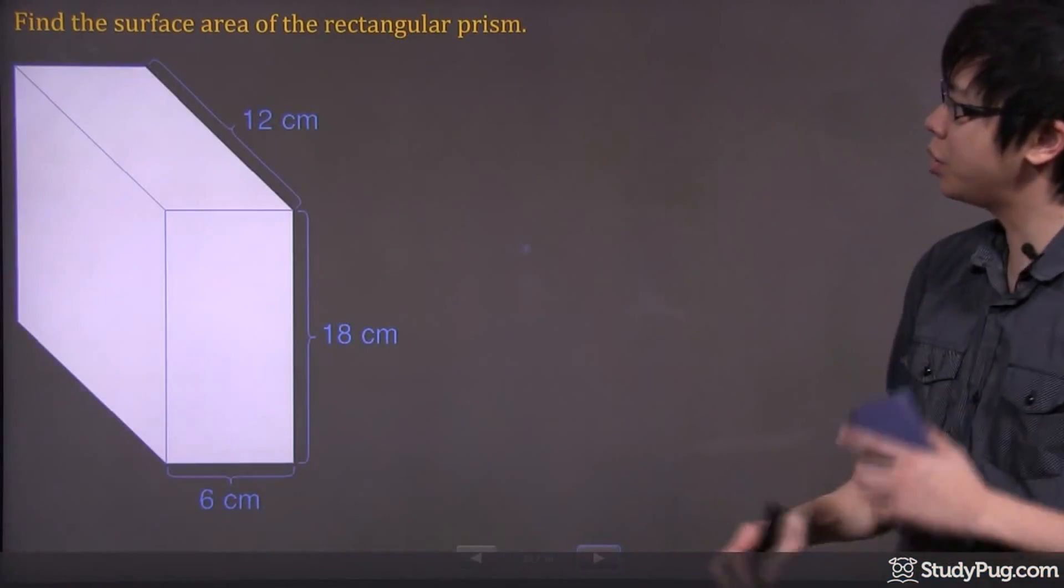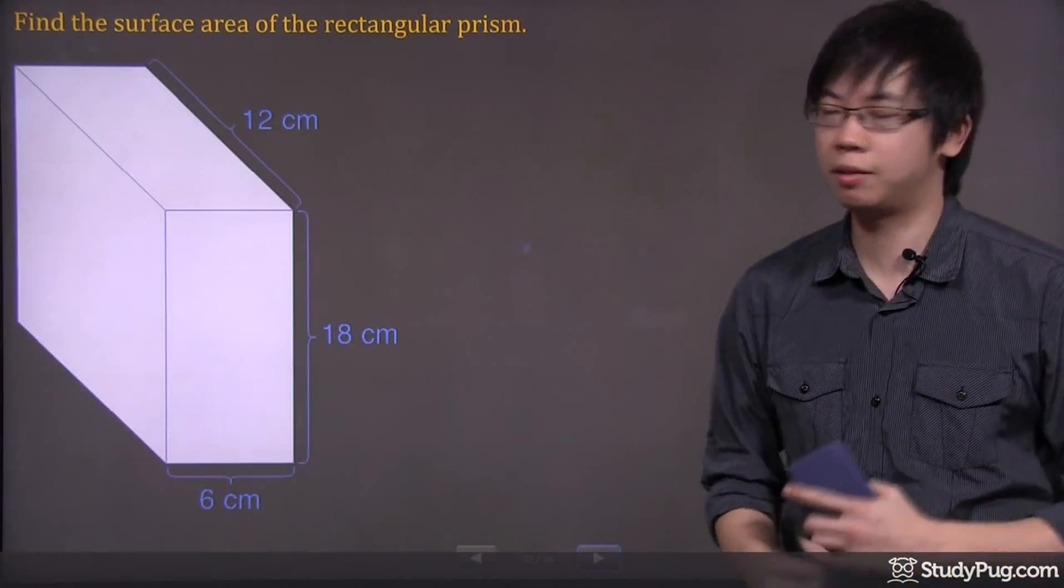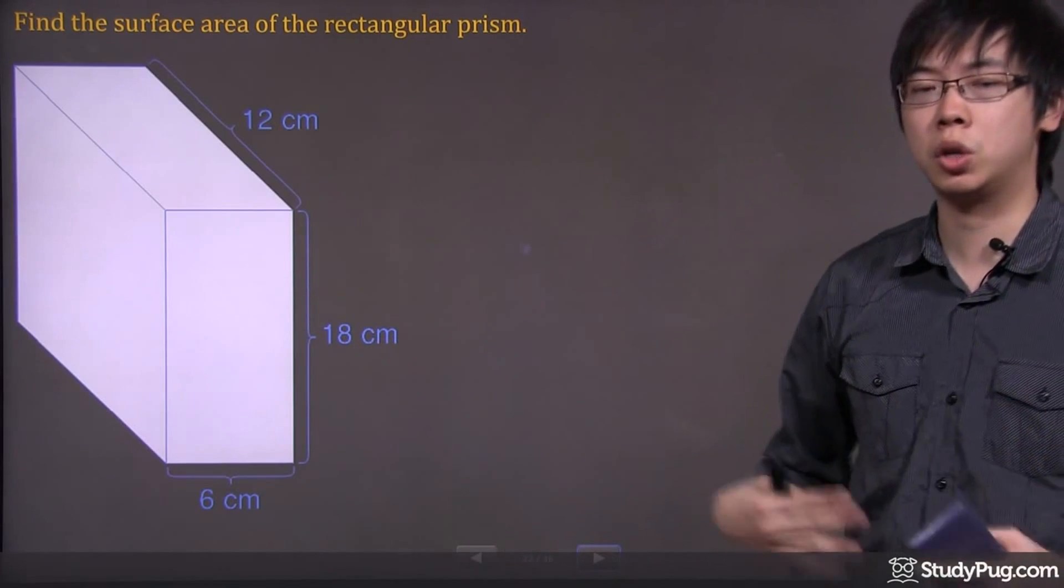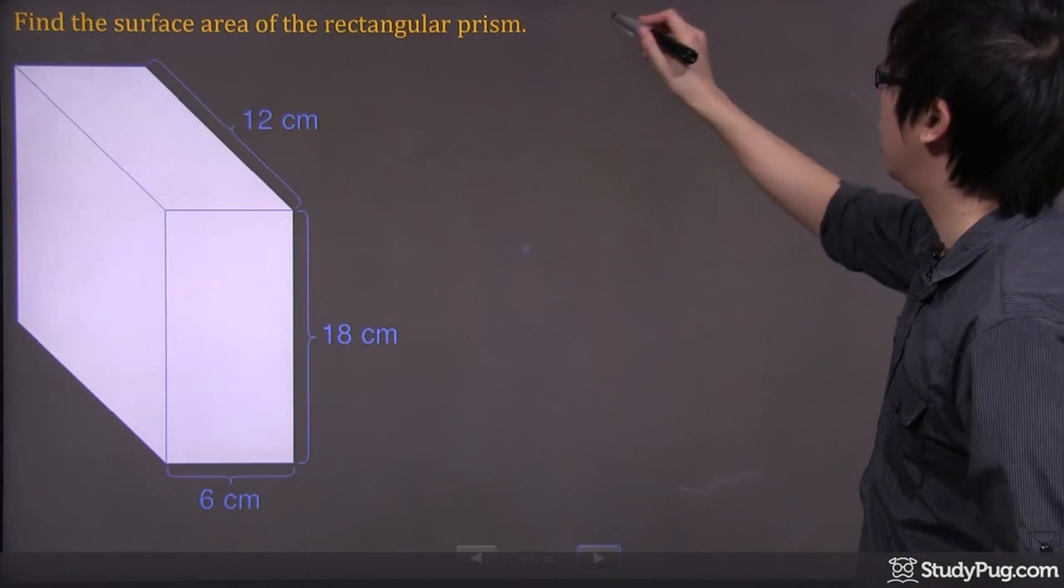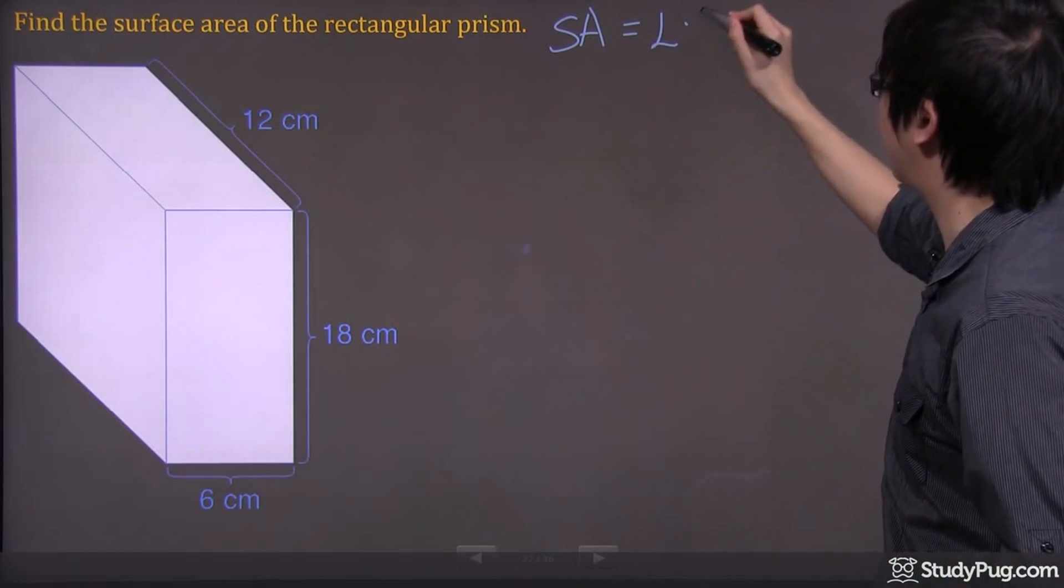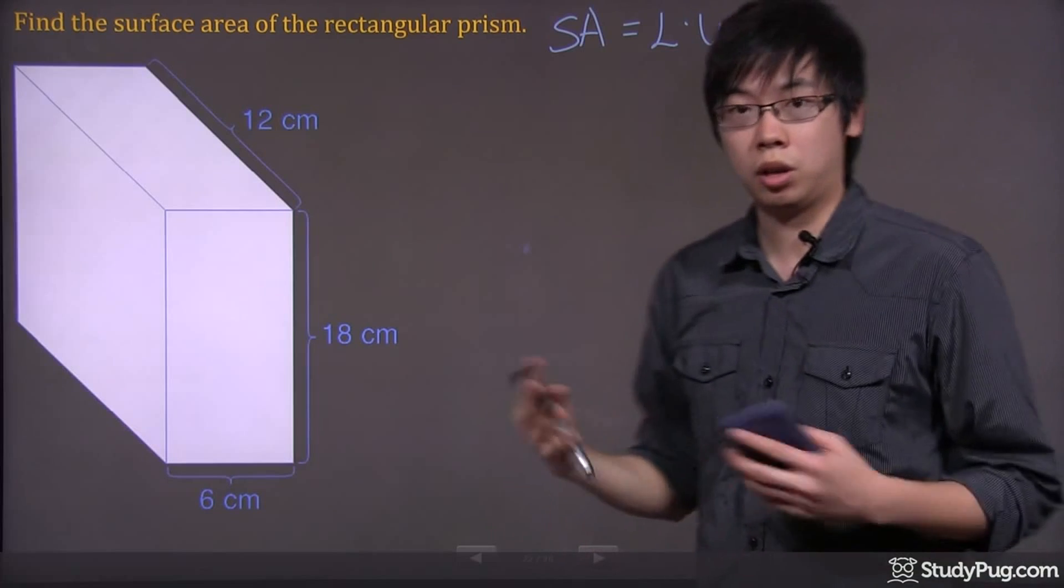Hi, welcome to this question. We're trying to find the surface area of the rectangular prism. Keep in mind, if you're trying to find the surface area of any rectangular sides, it's just the length times the width. So here it goes.